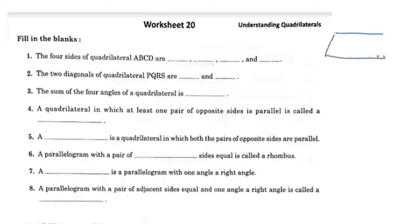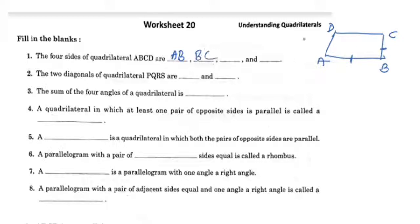This is quadrilateral ABCD. It has 4 sides: AB is one side, BC is one side, CD is one side, and AD is one side.